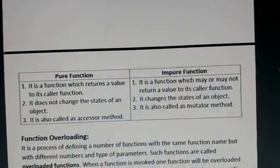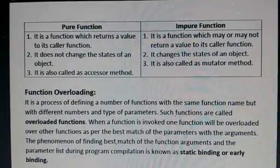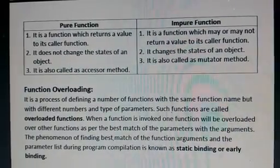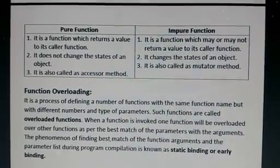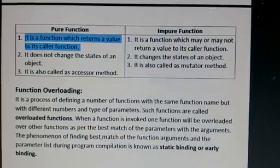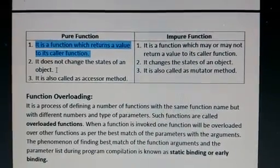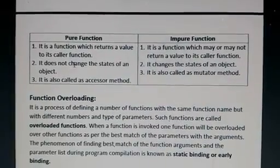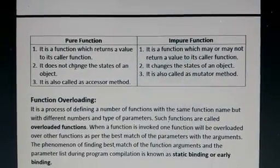Now, moving to another concept: pure functions and impure functions. We have learned two methods — pass by value and pass by reference — and from these, two types of functions are derived. A pure function is a function which returns a value to its caller, and it does not change the state of an object. This corresponds to the call by value concept.